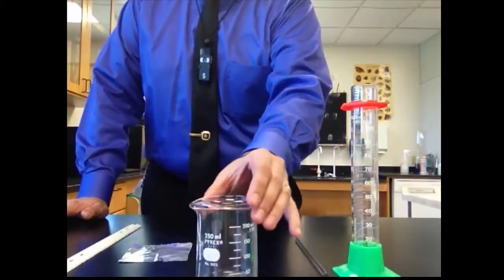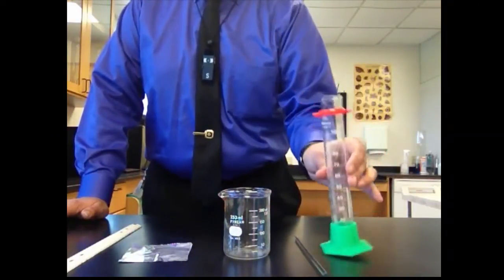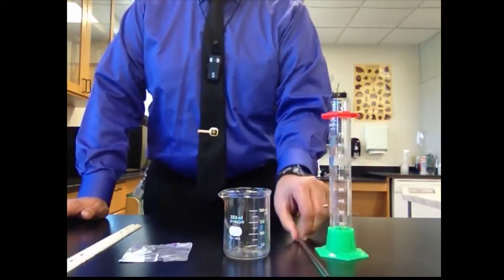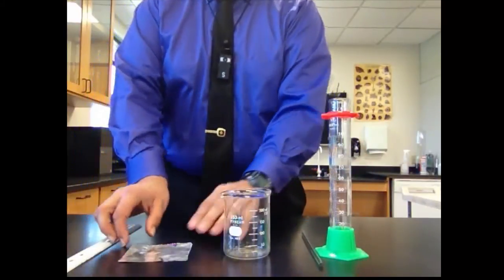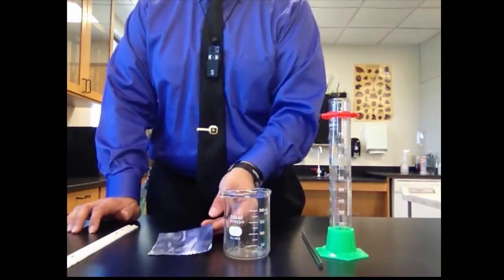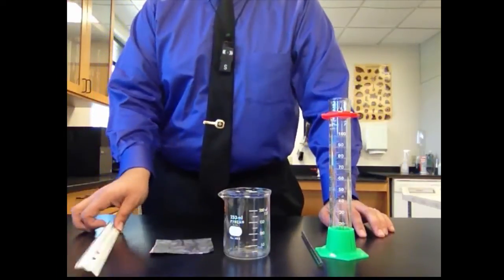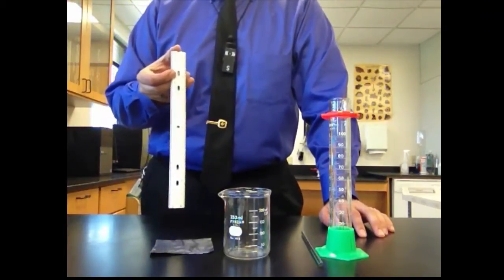We have this, we know what this is. This is a 250 mL beaker. And we have a 100 mL graduated cylinder. We have a stirring rod. We have a square, more or less, of aluminum foil. It may not be a perfect square, but that could come into play later on at the end of the lab.